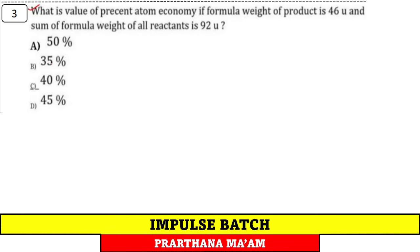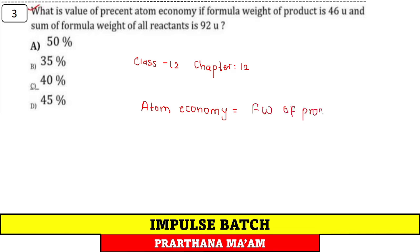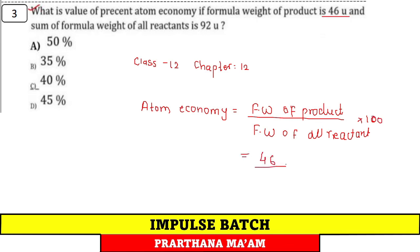Question 3: What is the percent atom economy if the formula weight of product is 46 and sum of formula weights of all reactants is 92? Atom economy = (formula weight of product / formula weight of all reactants) × 100 = 46/92 × 100 = 50%. Option A.